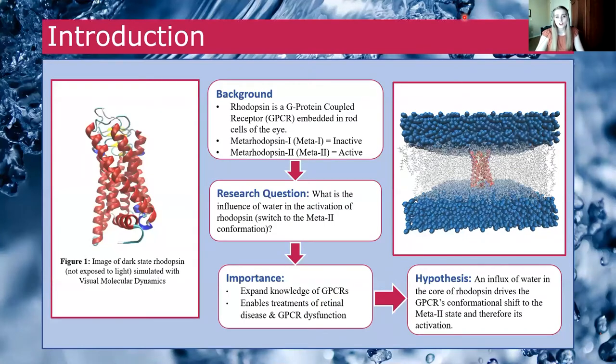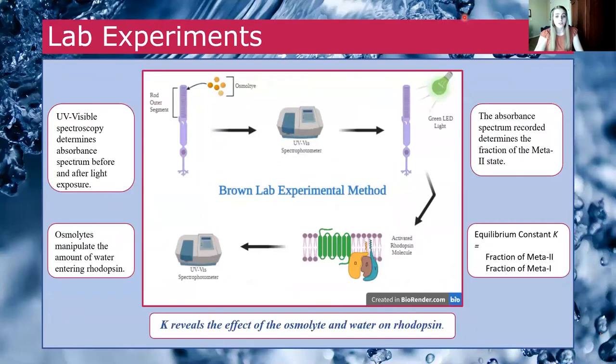Rhodopsin has two conformations that exist in physiological equilibrium: active and inactive. Measuring the presence of these conformations when exposed to varying levels of osmotic stress determines the influence of water.